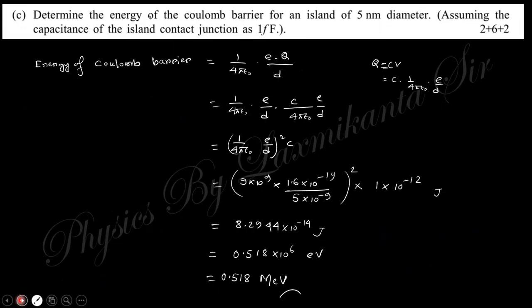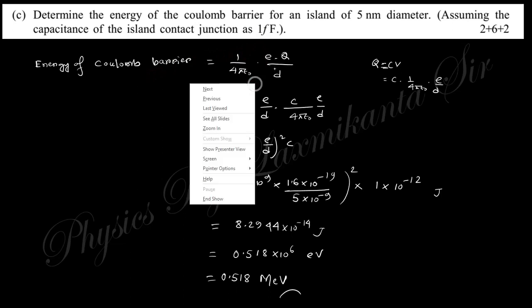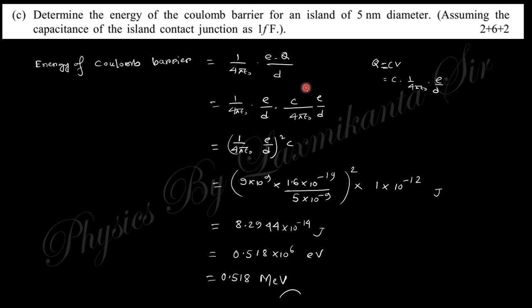Next: determine the energy of the coulomb barrier for an island of 5 nanometer diameter. The coulomb barrier potential energy is 1 by 4πε₀ times q² by d. The charge q is cv, and v is 1 by 4πε₀ times e by d. Putting this expression, you obtain the final result. Put the values given in this problem and you finally obtain 0.518 MeV.